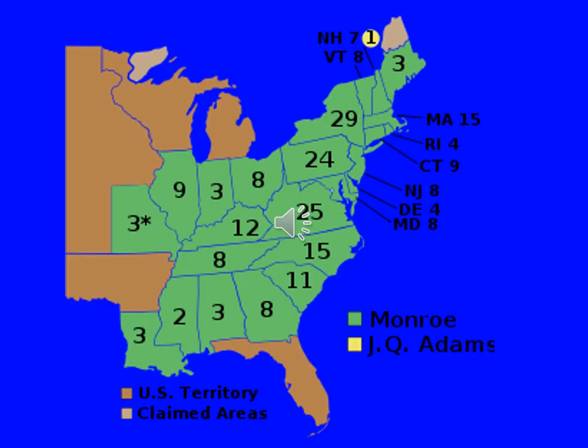You can see here the Electoral College of 1820 with James Monroe. There is only one electoral vote cast against him — one elector voted for Secretary of State John Quincy Adams simply to ensure Monroe did not carry the Electoral College unanimously, an honor reserved for George Washington alone. Apart from Washington's two terms, this is the biggest Electoral College landslide the country has ever had. You see the asterisk next to Missouri — Missouri is a new state that was not fully admitted, and that leads us into the Missouri Compromise.